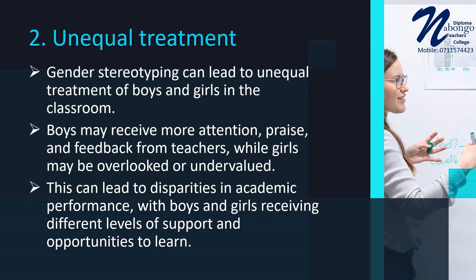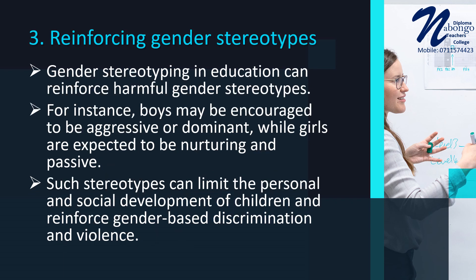Number 2 — Unequal Treatment: gender stereotyping can lead to unequal treatment of boys and girls in the classroom. For instance, boys may receive more attention, praise, and feedback from teachers, while girls may be overlooked or undervalued. This can lead to disparities in academic performance, with boys and girls receiving different levels of support and opportunities to learn.